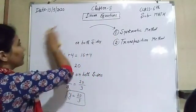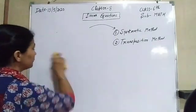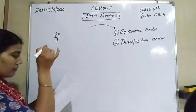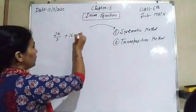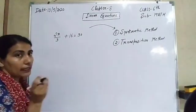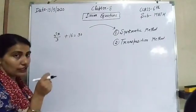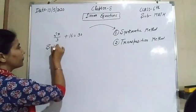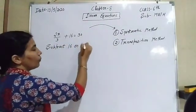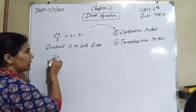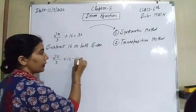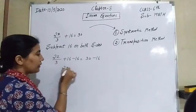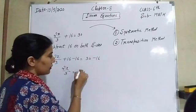We've solved that equation using the systematic method. Now for the next question: we have 2x/3 + 16 = 30. First we concentrate the constant on the left-hand side. Here is positive 16, so we subtract 16 on both sides. On the left, the positive 16 and negative 16 cancel, leaving only 2x/3, and on the right 30 - 16 = 14.